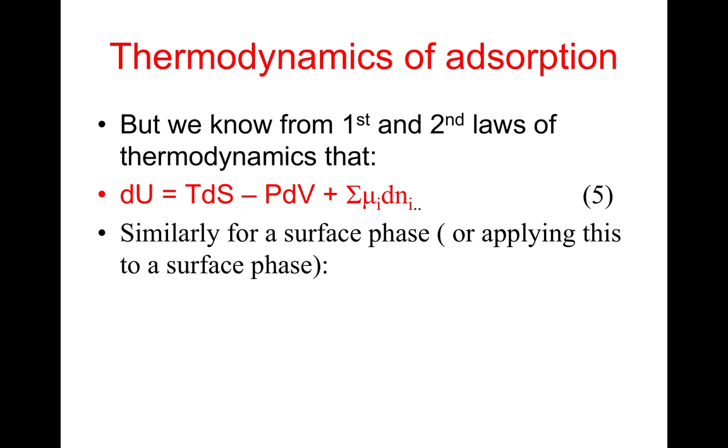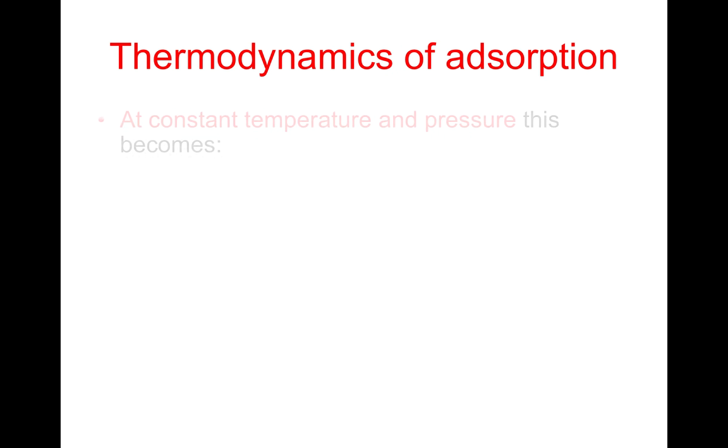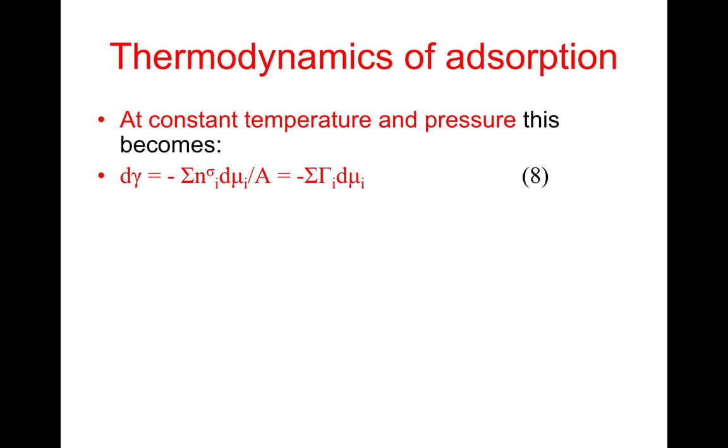Similarly, for a surface phase, dU^sigma = T dS^sigma - P dV^sigma + γ dA + Σμ_i dn_i^sigma. If we obtain S^sigma dT - V^sigma dP + A dγ + Σn_i^sigma dμ_i = 0. If we look at the situation under constant temperature and pressure, this equation will become dγ = -Σn_i^sigma dμ_i / A, which is equal to -Γ_i dμ_i. That's equation 8.